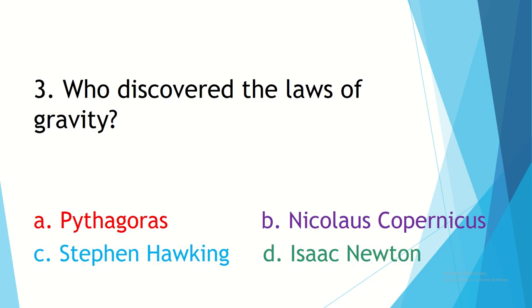Question 3. Who discovered the law of gravity? Option A, Pythagoras. Option B, Nicholas Copernicus. Option C, Stephen Hawking. Option D, Isaac Newton.